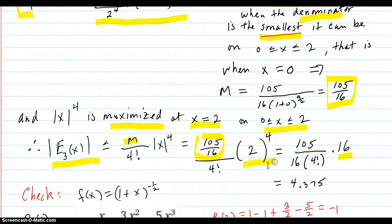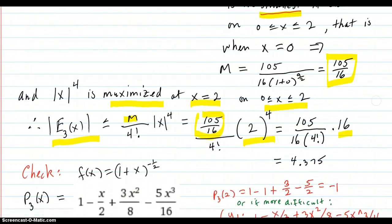That's 4 factorial 2 to the fourth which is 105 sixteenth 4 factorial times 2 to the fourth which is 16. So the sixteenths cancel out you divide everything and you get this 4.375.